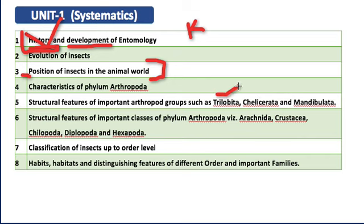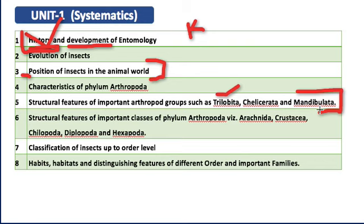For the structural features of important arthropod groups — Trilobita, Chelicerata, and Mandibulata — Trilobita, even though an extinct group, has certain important characteristics serving as a connecting link between groups. For Chelicerata, remember at least three to four important characteristics and examples. For Mandibulata, note what important characteristics it has, what examples belong to it, and what groups fall under it. Key structural characteristics include the chitinous exoskeleton and the presence of mandibles in Mandibulata.